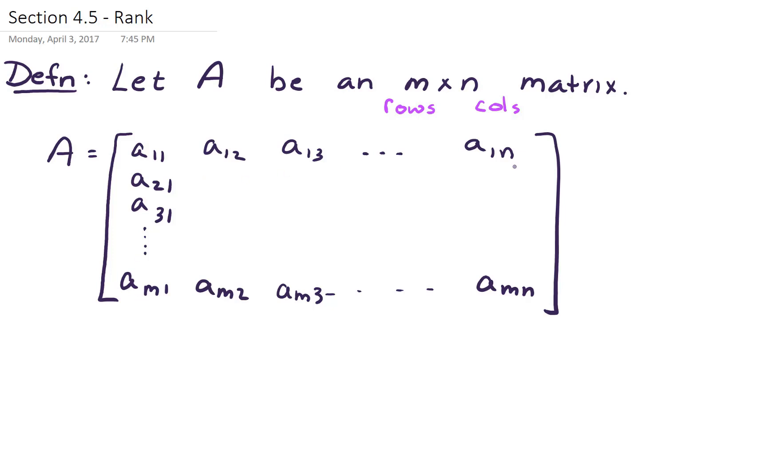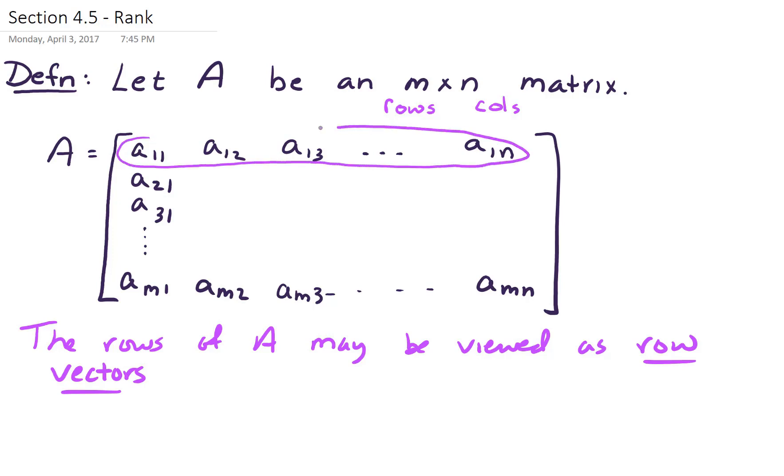And N columns. So the rows of A can be viewed as row vectors. The rows of A may be viewed as row vectors. Let's circle an example of what we mean by a row vector. Here's a row vector. For example, we'll say R1 looks like the row vector A11, A12, all the way up through A1N. Each row vector is an element of R^n because there's n elements in that row vector.